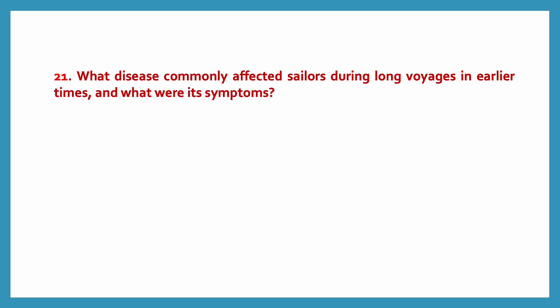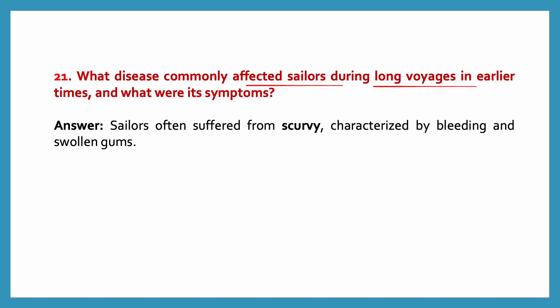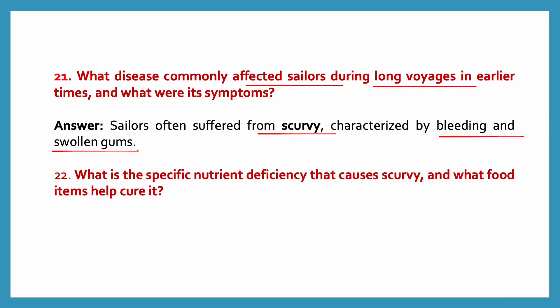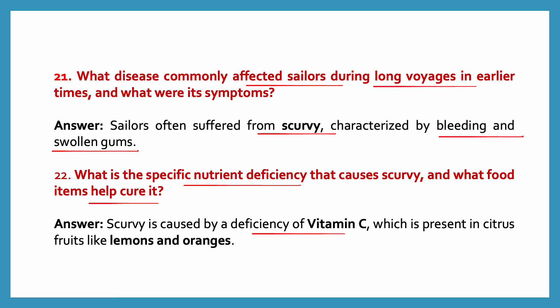What disease commonly affected sailors during long voyages in earlier times and what were its symptoms? Sailors often suffered from scurvy, characterized by bleeding and swollen gums. Scurvy is caused by deficiency of vitamin C, which is present in citrus fruits like lemons and oranges.